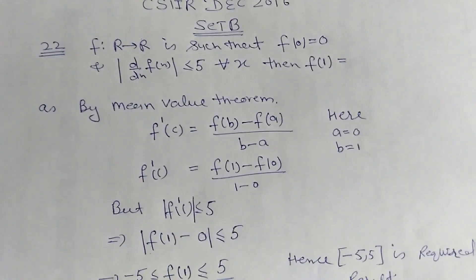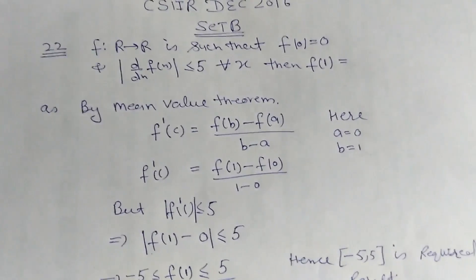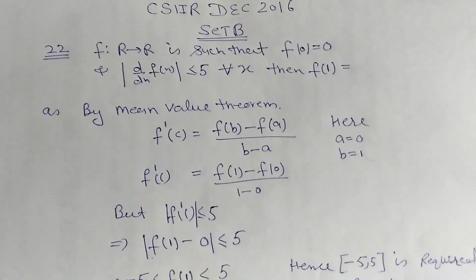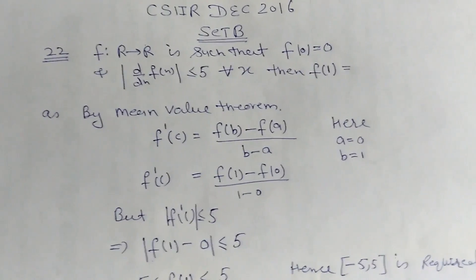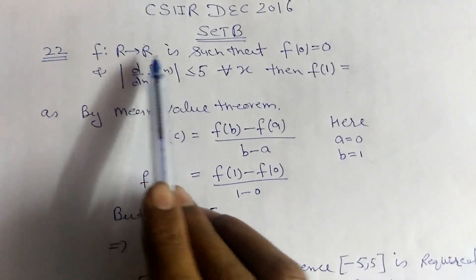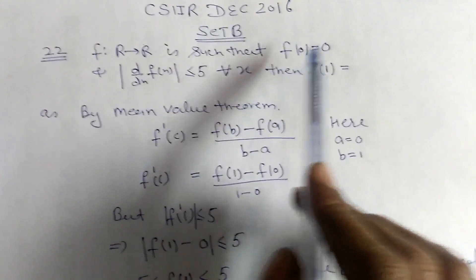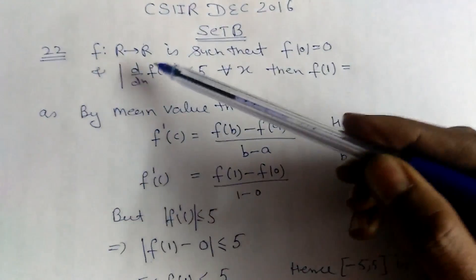Hello friends, here is a solution for CSIR December 2016 Set B, question number 22. It is given that f is a function from R to R such that f(0) = 0 and the absolute value of its derivative is less than or equal to 5 for all x.